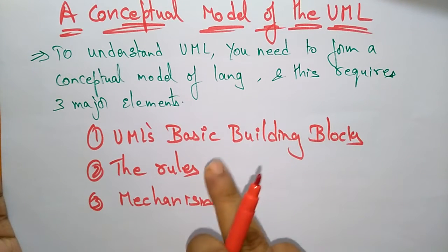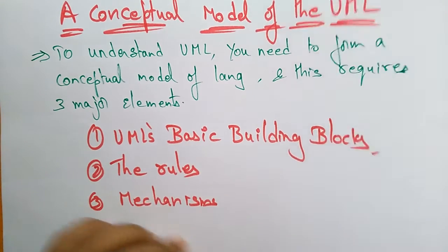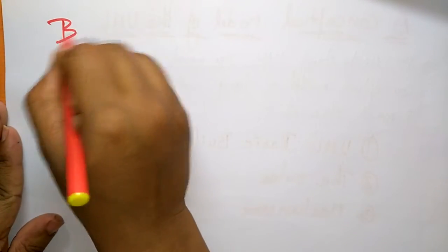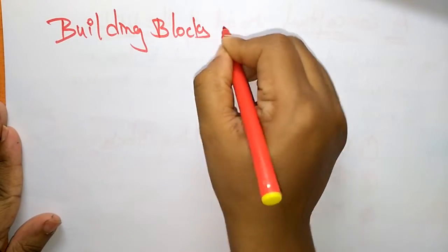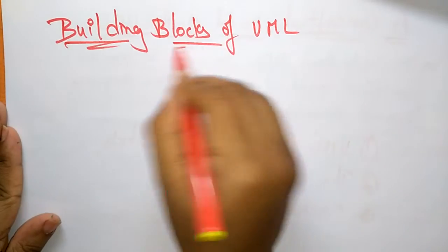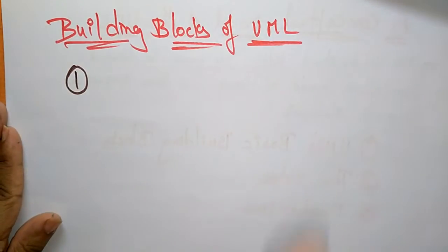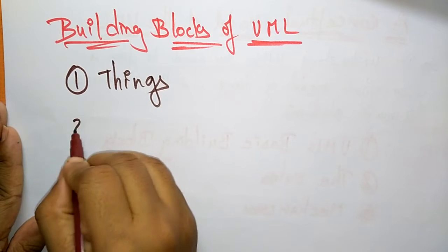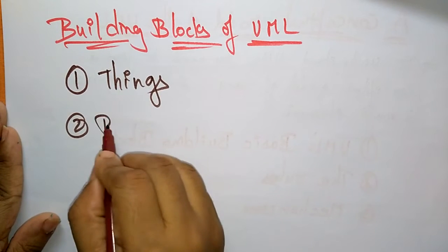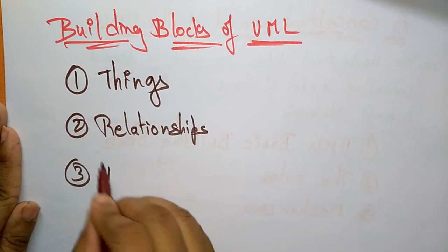So these are the three major elements: UML basic building blocks, the rules, and the mechanisms. Now let us see what are the building blocks of unified modeling language. There are three building blocks: one is things, second one is relationships, and third one is diagrams.